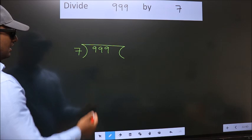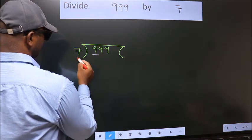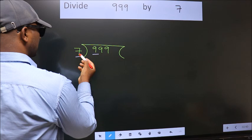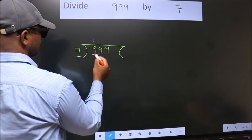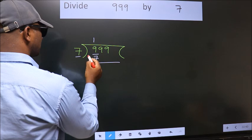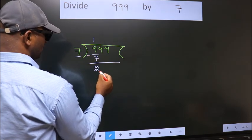Next, here we have 9. Here 7. A number close to 9 in 7 table is 7 once 7. Now, we should subtract. We get 2.